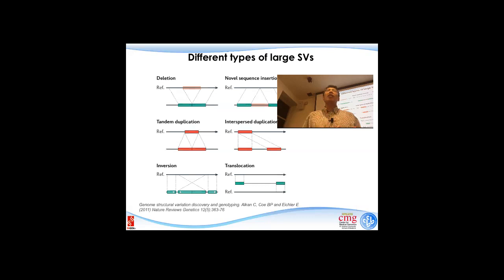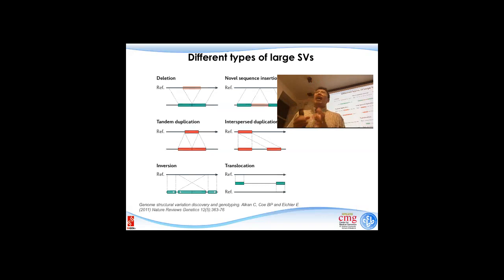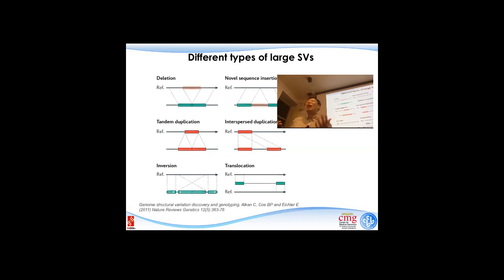There are different types of large structural variations. When we talk about structural variations, we're not talking about SNPs or small insertions and deletions. These are large structural variations. For example, a deletion — the top is the reference genome, the donor is the sample we sequenced, and very clearly this part is a deletion that's in the reference but not in our genome. For this particular case, we're usually talking about a few hundred to sometimes a few hundred thousand bases. We've also seen those large structural variations that in extreme cases could be an entire chromosome.